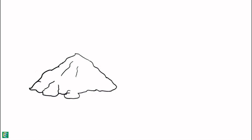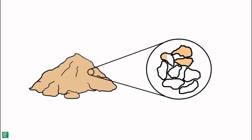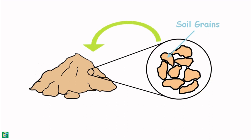A soil mass is composed of small solid particles which we call the soil grains. These soil grains, when depositing in a soil mass, arrange themselves in a way that some amount of empty space is enclosed between them. We call these spaces voids.